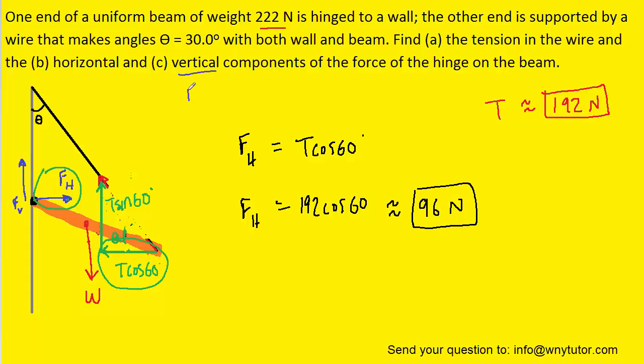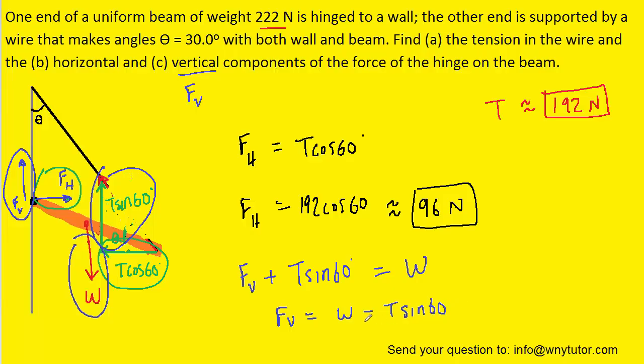For part C, we need to find the vertical component of that hinge force, so that's FV. We could set the two upward Y forces equal to the single downward Y force. Once again, we'll do that because the beam is in equilibrium. Let's subtract T sine 60 from both sides. And then we can plug in the known values for the weight and the tension. And computing that gives us a value of approximately 55.7 newtons. So that will be the vertical component of the force of the hinge on the beam.